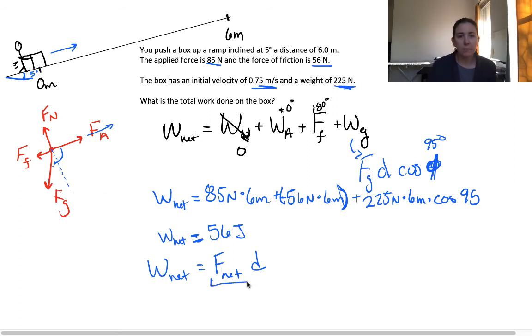So the net force, we just sum the forces in the direction that is parallel to the ramp, and we get the force of friction, which is negative, Fg parallel, plus the applied force.